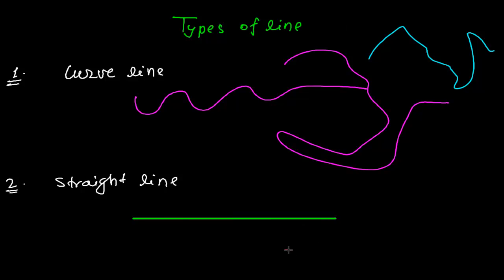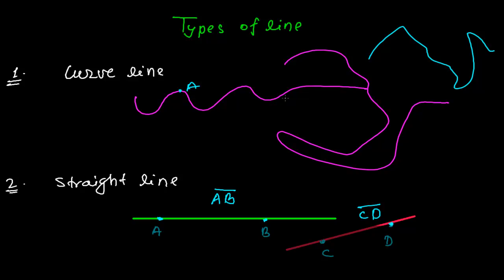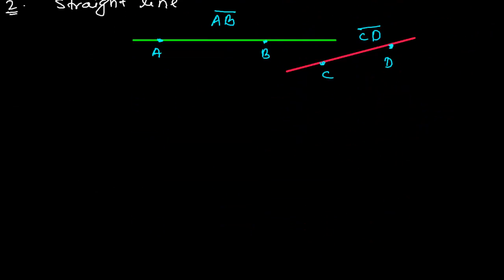Let me draw one more here in red color. So this is another example of a line. We can give names to these lines using points. Suppose this is point A and this is point B, so this is the AB line. This is point C and this is point D, so this is the CD line. Similarly, AB and PQ are straight lines.